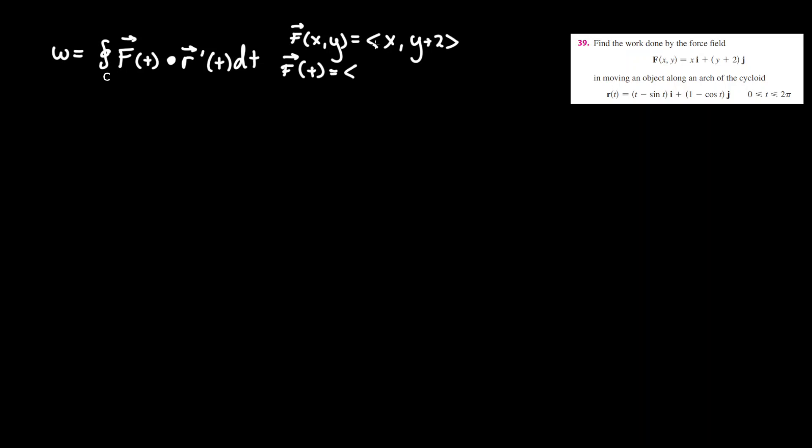However we're already given a time function vector of r so we can see that x becomes t minus sine t because that's also a part of the i vector. So all we have to do is plug in t minus sine t for x and 1 minus cosine t for y.